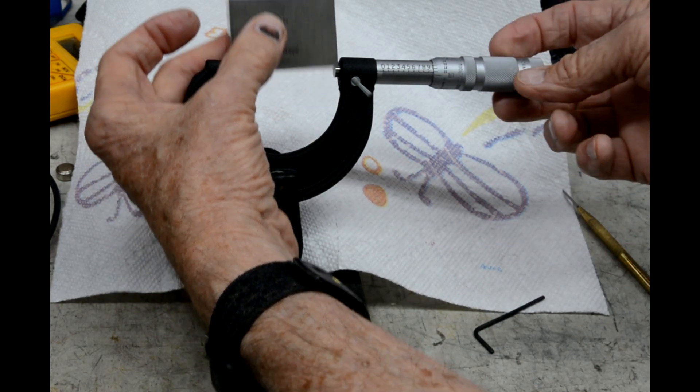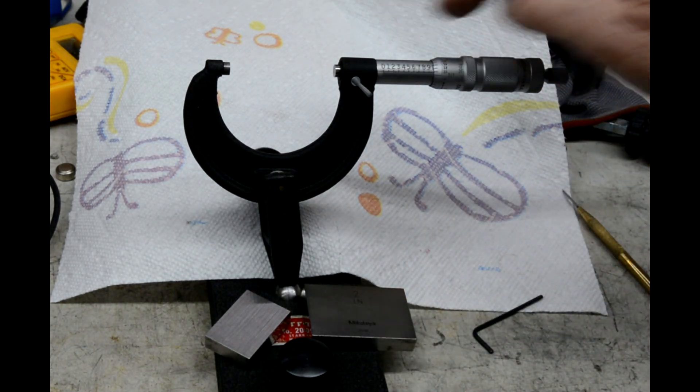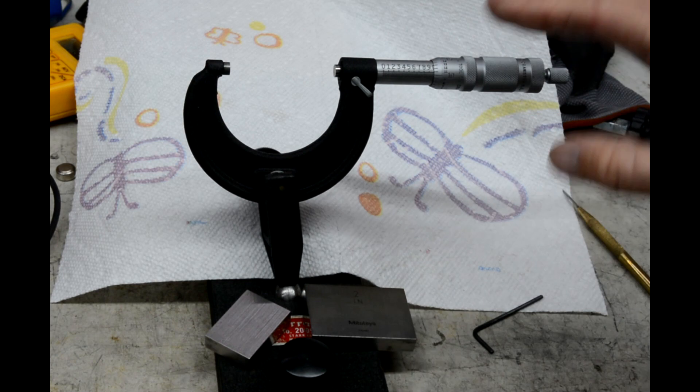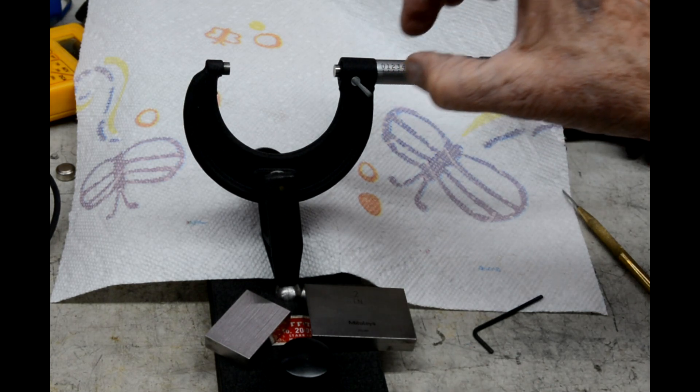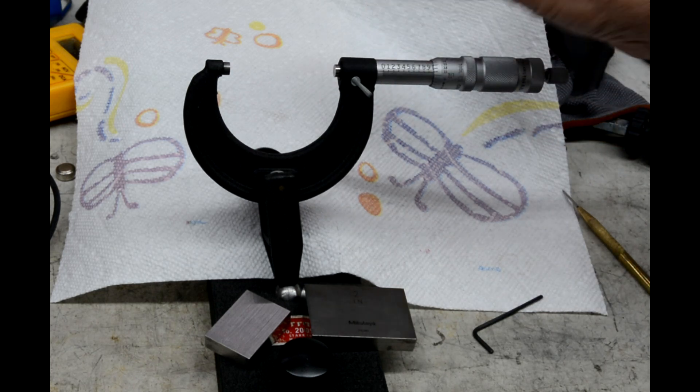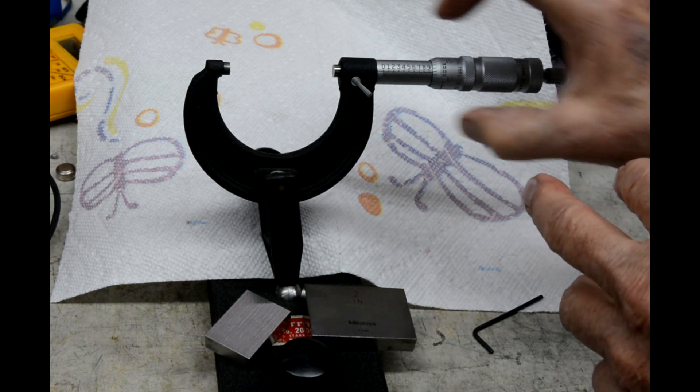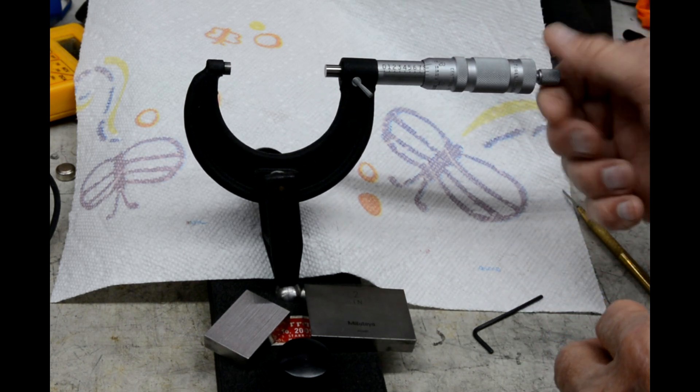So this thing is adjusted. That's how you adjust a central tool micrometer. Different manufacturers have different ways of doing it. Starrett and others need a little spanner wrench to tighten it. But this is the first one I've seen that you can actually slide the barrel back and forth, which is pretty hokey.